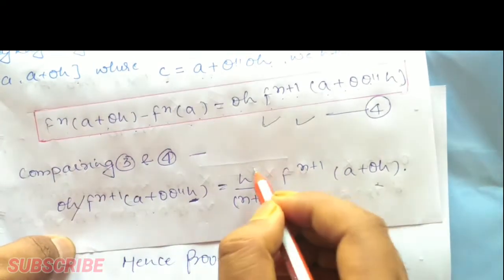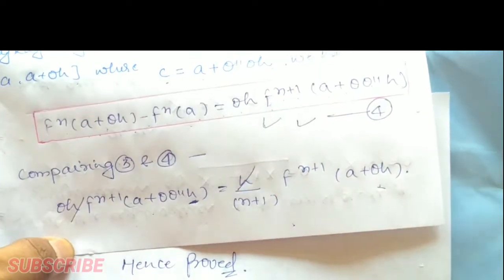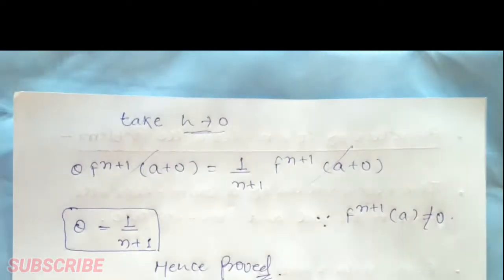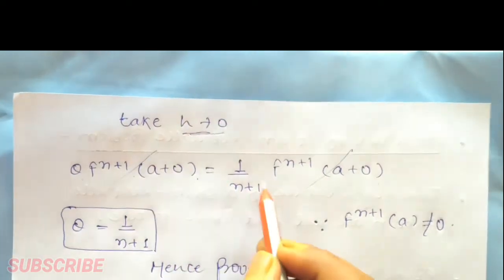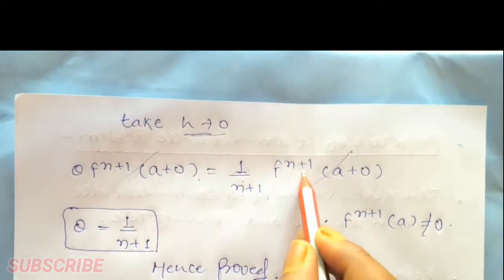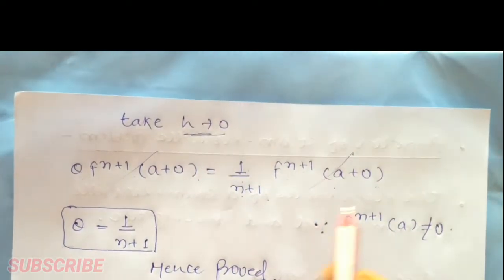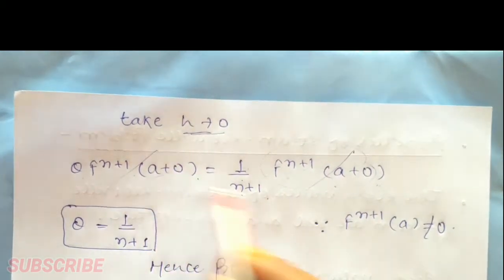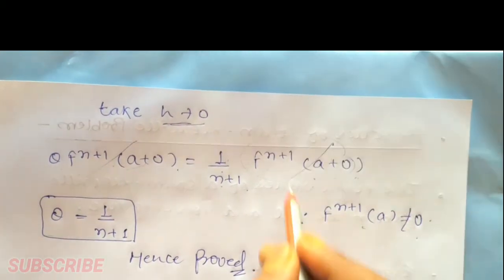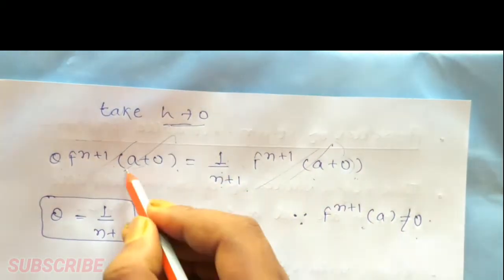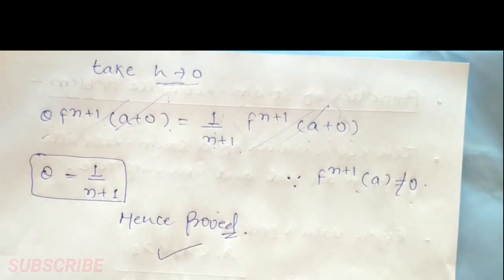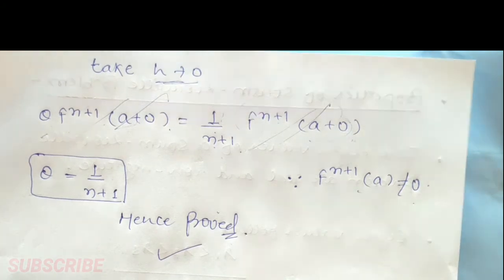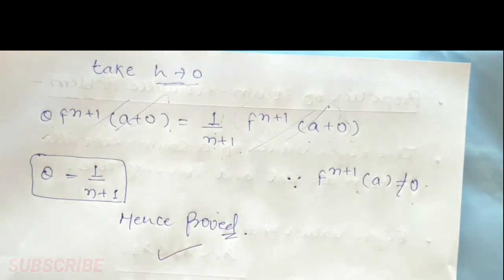After substituting h → 0, f^(n+1)(a + 0) = f^(n+1)(a), which is given to be non-zero, so it cancels out. What remains gives θ = 1/(n+1), which proves the result. The proof is complete.